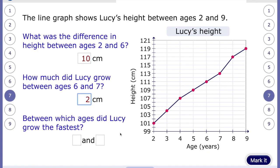And then it says between which ages did Lucy grow the fastest? So we're going to look at the graph and we're going to look for the steepest line between two points here. If we look closely, it looks to me that her fastest growth was here. These look like the steepest lines. So at age 7, she was 113. And at age 8, she was 117. So she's grown 4 centimetres in those two years. Where the other years, it looks like she's grown 2 centimetres.